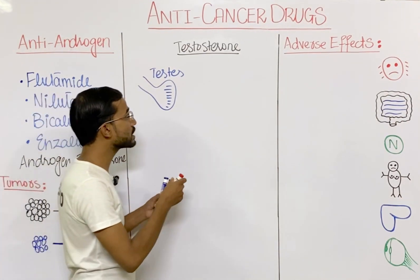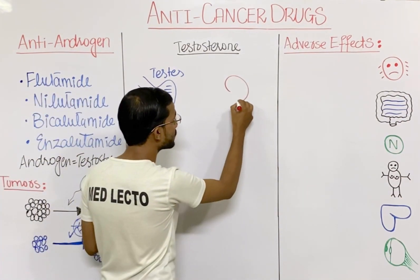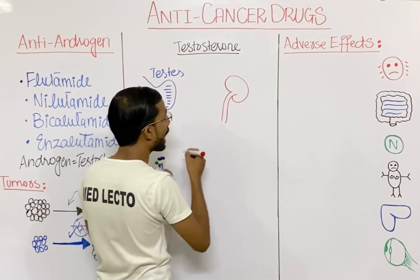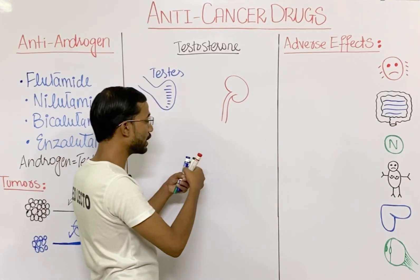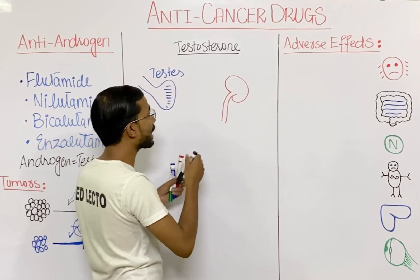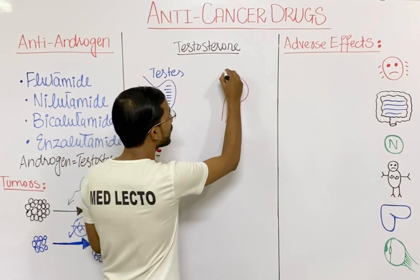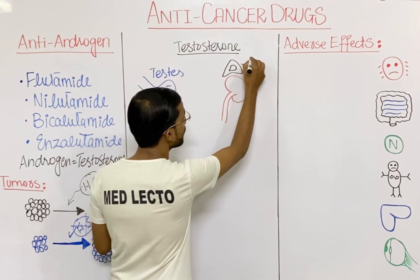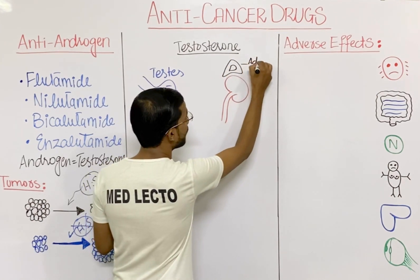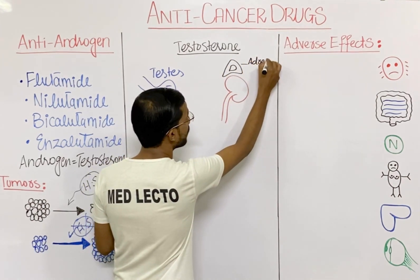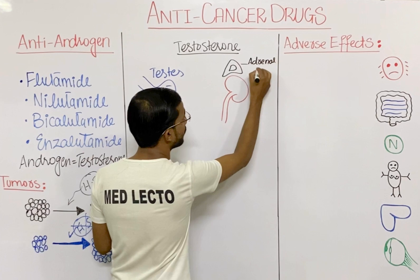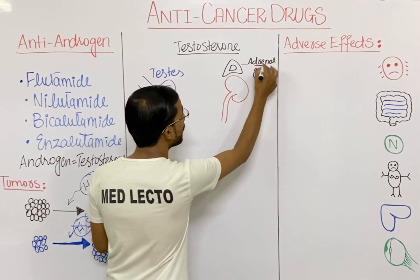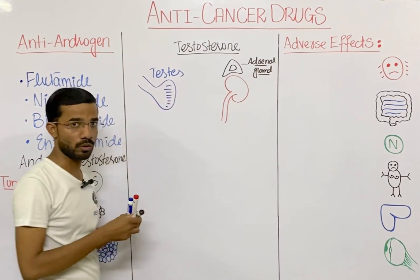The next source is the adrenal gland. Here is the kidney, and above the kidney you will see the presence of the adrenal gland. The adrenal gland is also an important source of testosterone.